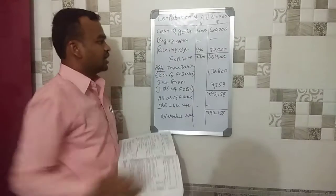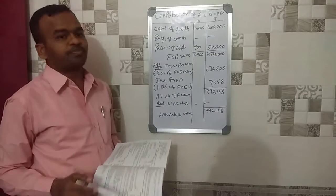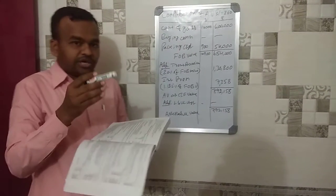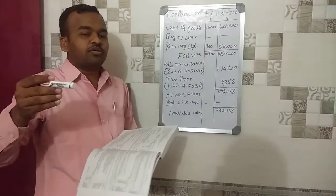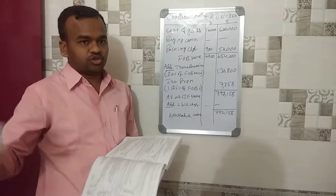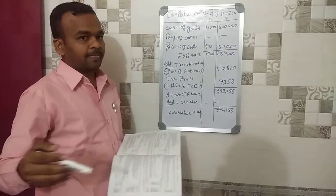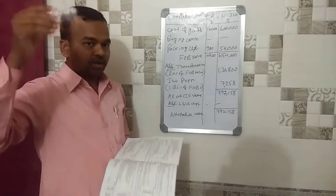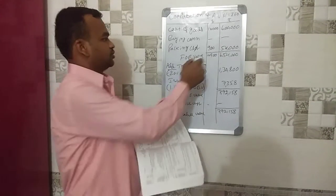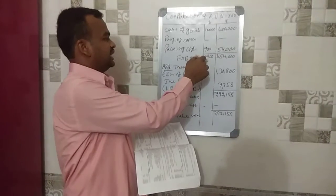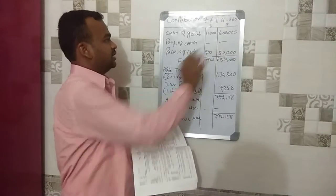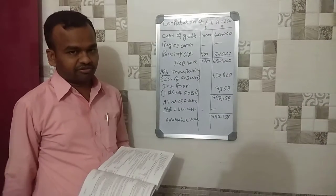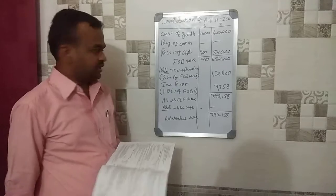The free-on-board value is calculated as the price paid in the foreign country before export. The total comes to ten thousand nine hundred dollars. Converting at sixty rupees per dollar gives six lakh fifty-four thousand rupees as the FOB value.